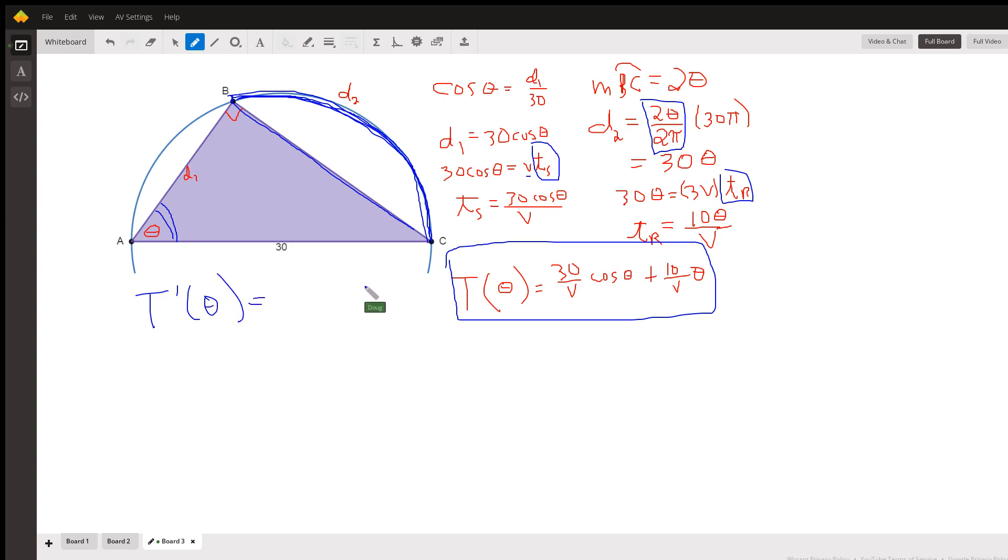I think if you do that you'll find out that T prime proves that T of theta actually has a maximum value when he goes to point B. So he needs to actually run the whole way, okay.